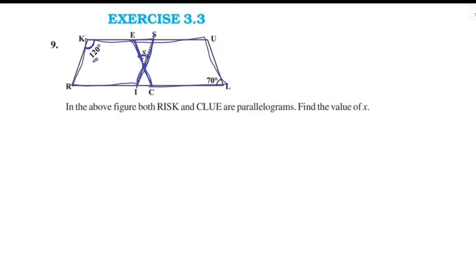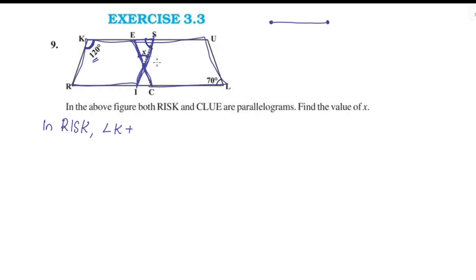In parallelogram RISK, angles K and S are adjacent angles on the same side. So we write: Angle K plus Angle S equals 180 degrees, because adjacent angles in a parallelogram are supplementary.